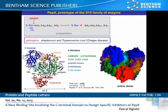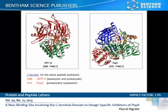PEPICS is an aminopeptidase of the S15 family that cleaves dipeptides from the N-terminus of polypeptides having a proline residue at the second position. Involved in bacterial nutrition and in peptide maturation, this serine exopeptidase, as a counterpart of the mammalian DPP-4, has been proposed to play a role in pathogenicity for streptococci and to be a promising target against trypanosomes.